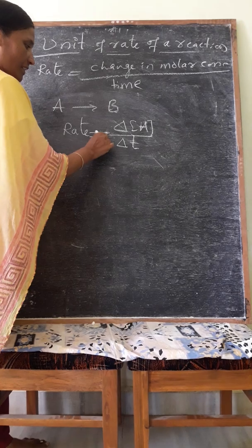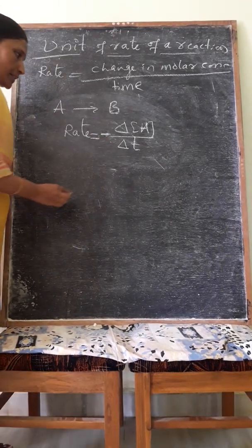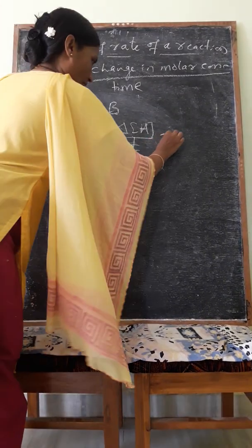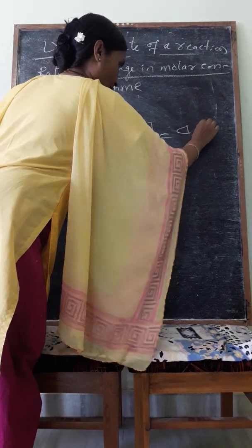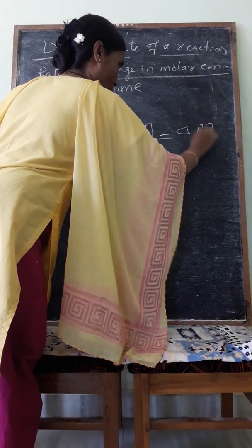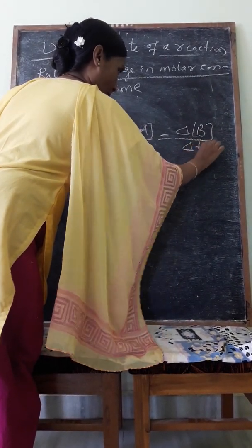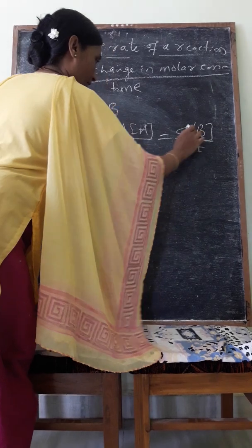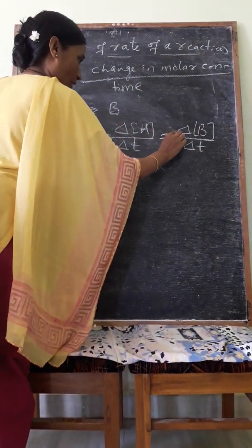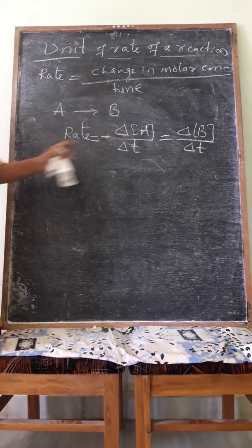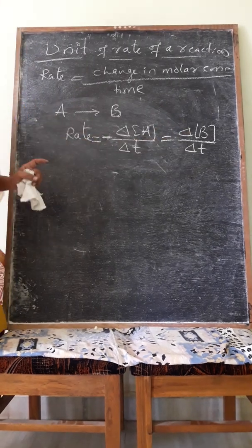Negative indicates decrease in concentration of reactant. That is equal to delta concentration of B divided by delta t. B indicates the product. Therefore, its symbol is plus — that means increase in concentration of the product.